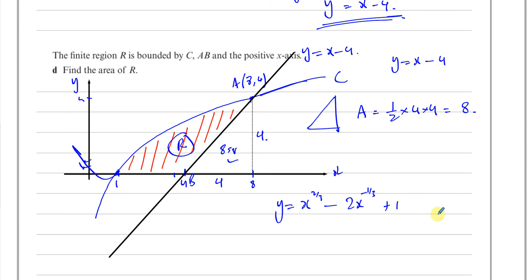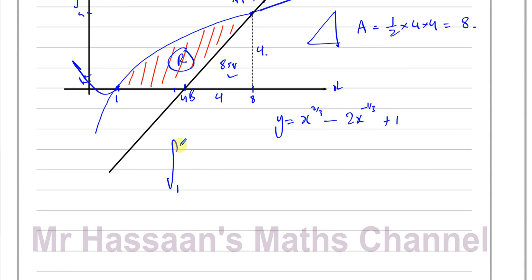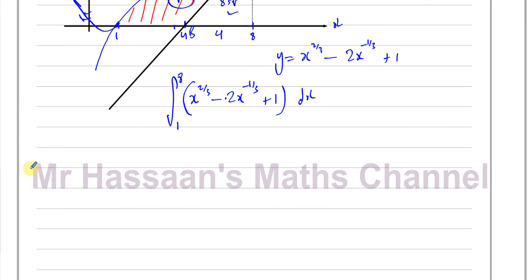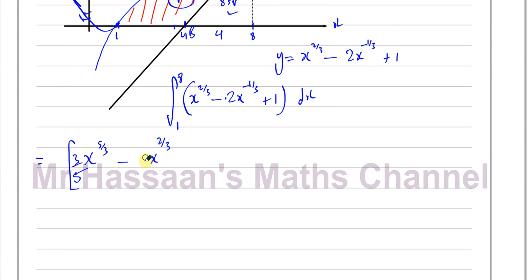We need to integrate x to the power of 2 thirds minus 2x to the power of minus 1 third plus 1 with respect to x between limits 1 and 8. Integrating term by term: x to the power of 2 thirds integrates to (3/5)x to the power of 5 thirds; minus 2x to the power of minus 1 third integrates to minus 3x to the power of 2 thirds (since 2 divided by 2 thirds gives 3); and plus 1 integrates to plus x.